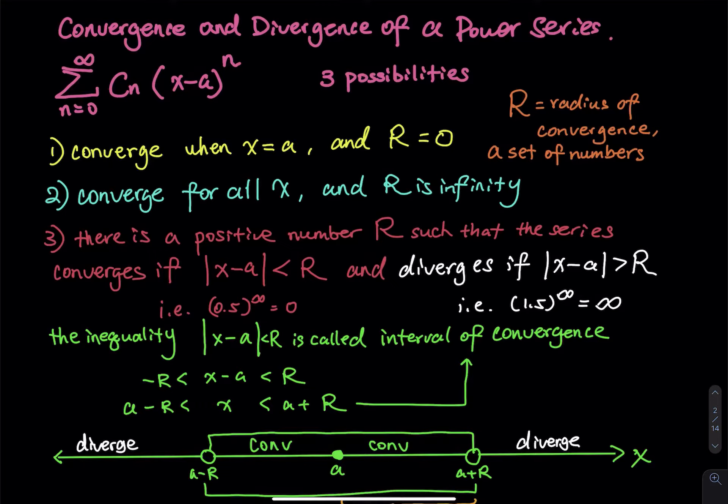In case one, the power series is only convergent to one x value only, no other exception. Case two is converged to any x value. Case one and case two are pretty rare. But case three, you see that almost in every single problem.